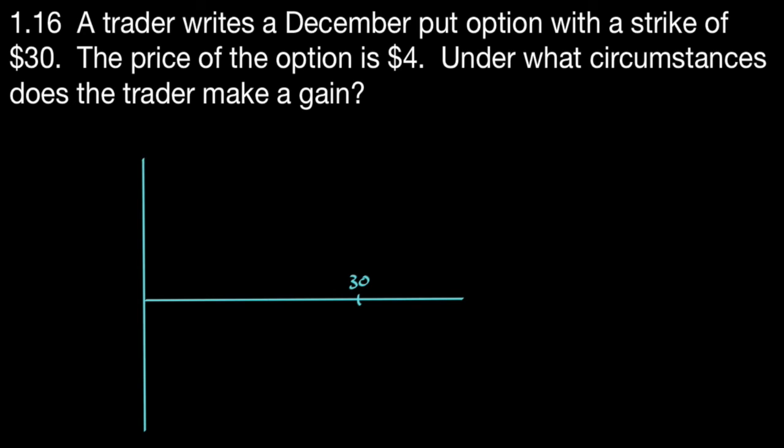Question 1.16. A trader writes a December put option with a strike price of $30. The price of the option is $4. Under what circumstances does the trader make a gain? So I've written, we have to be very clear, what I've done here: I've written a put option, and that means I get $4. I'm the writer of it, so I get $4. It's got a strike price of $30. So the first thing I want to do is I want to draw my chart here.